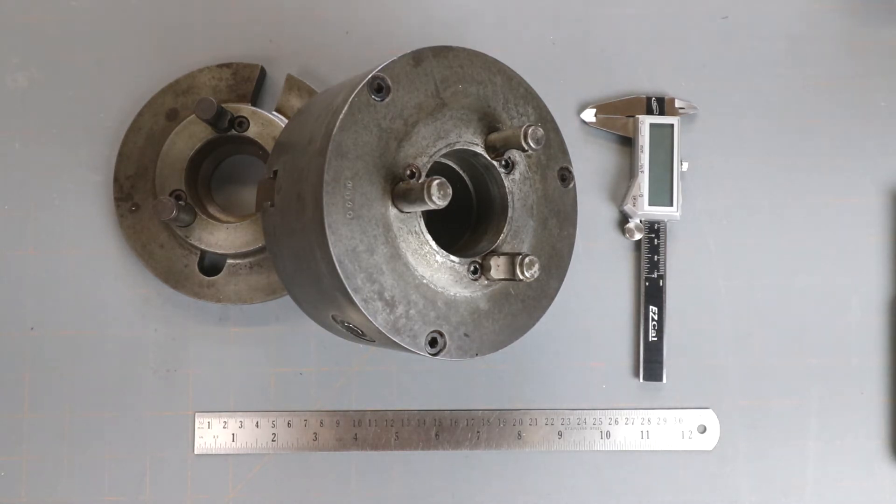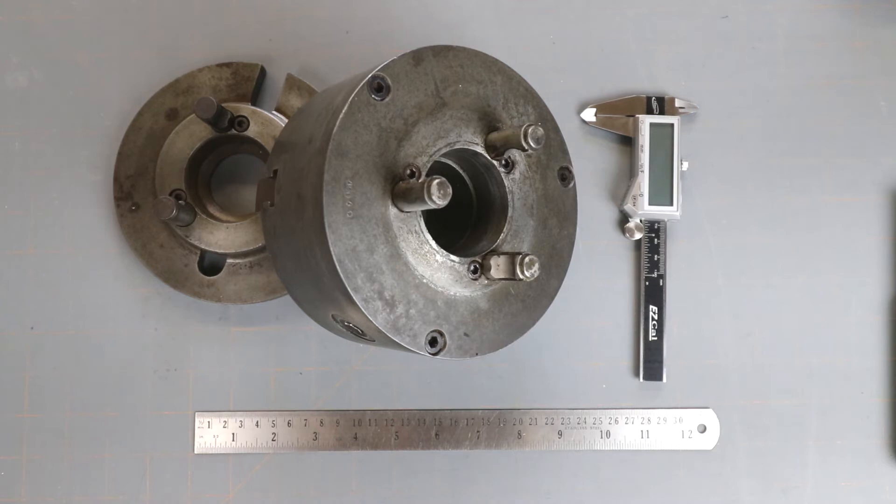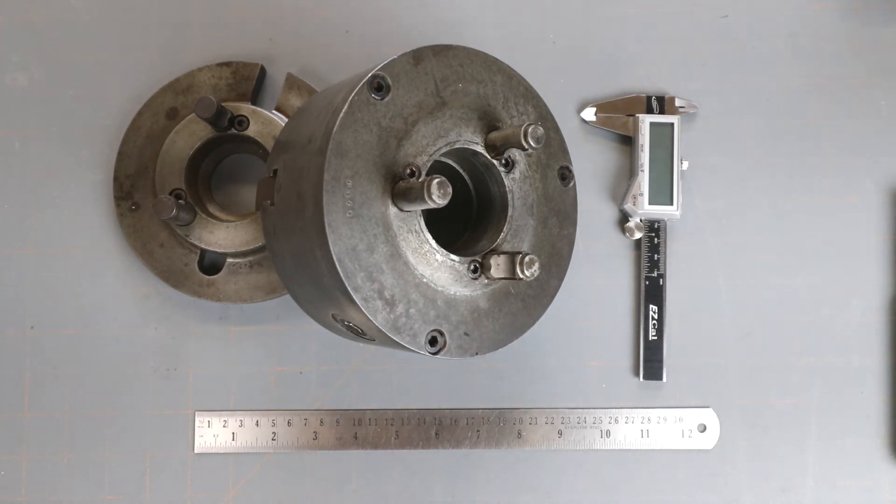For the home shop, chances are that if you're trying to determine which type of cam lock system you have, you're more than likely trying to determine if it's a D1-3 or a D1-4. And it's quite simple actually to determine the difference.